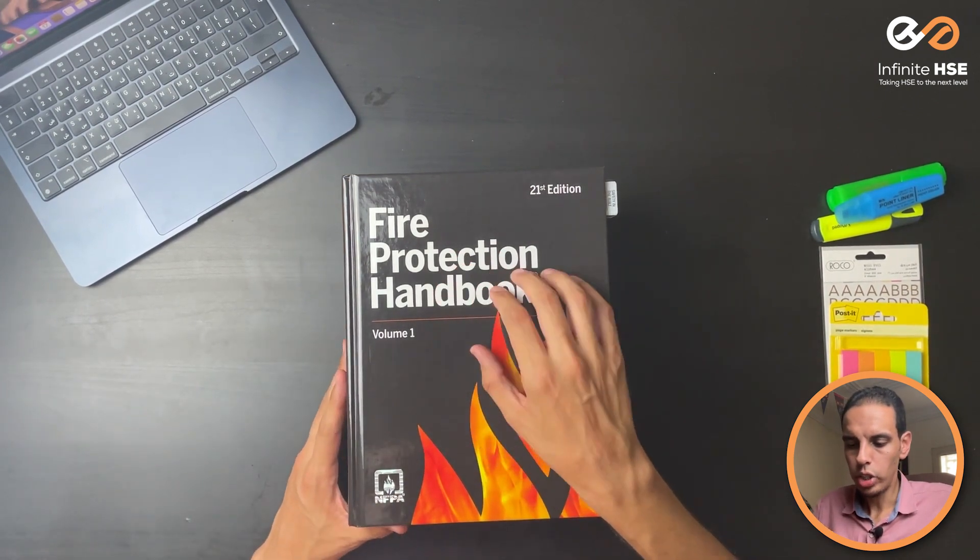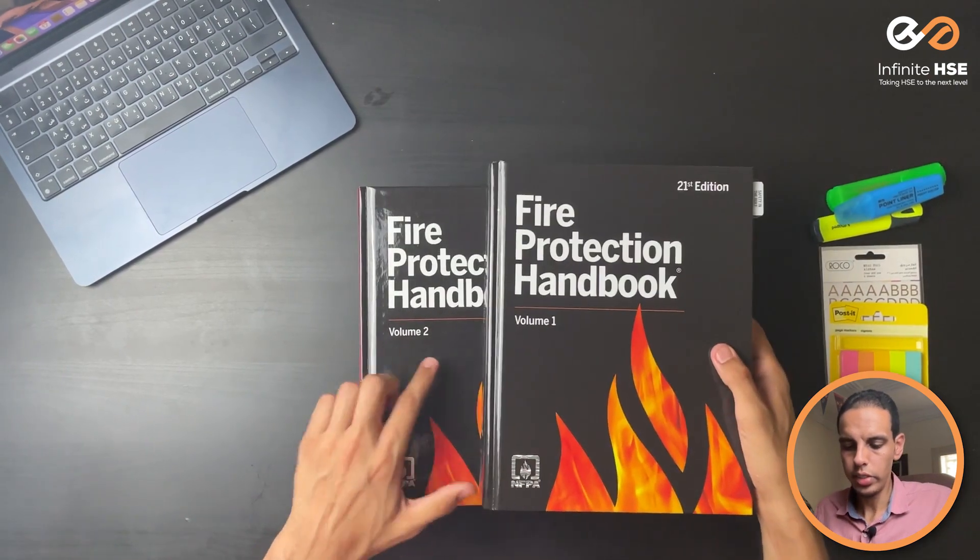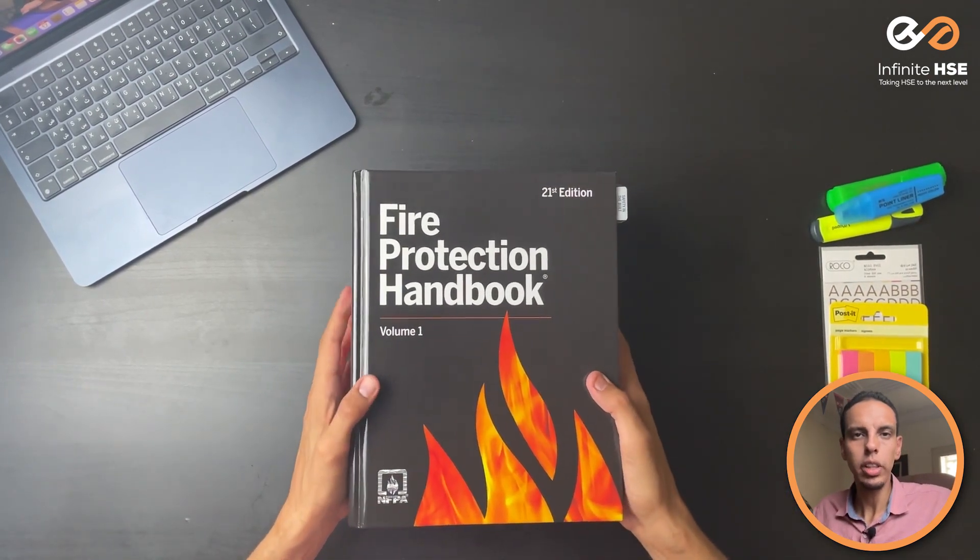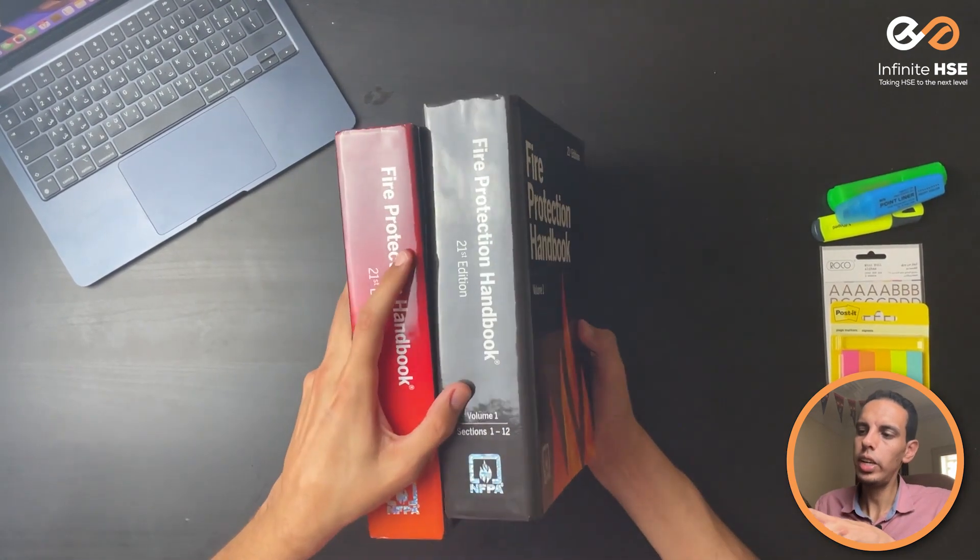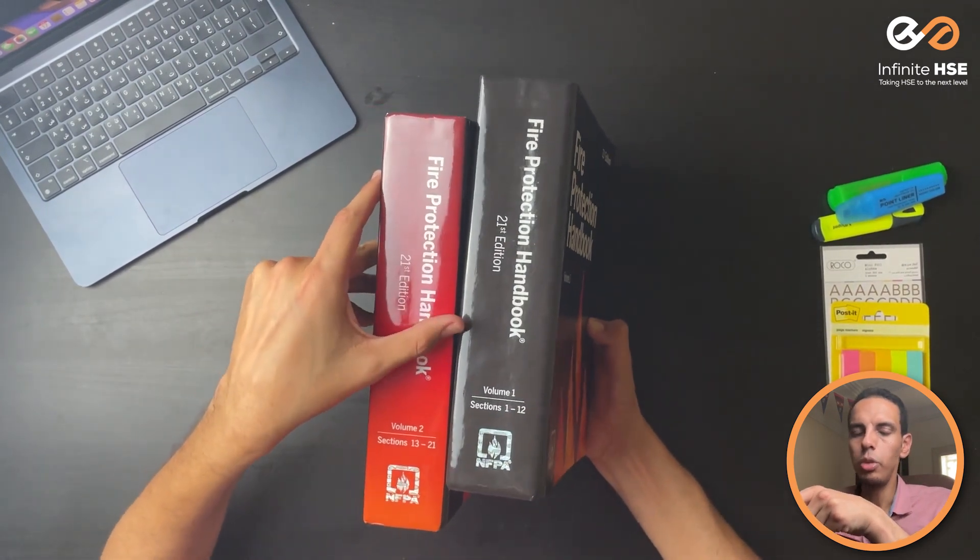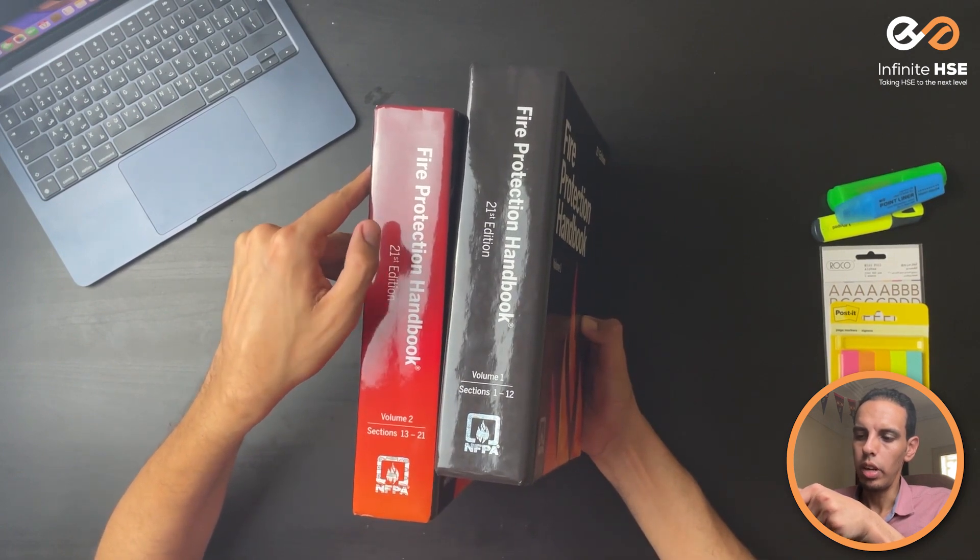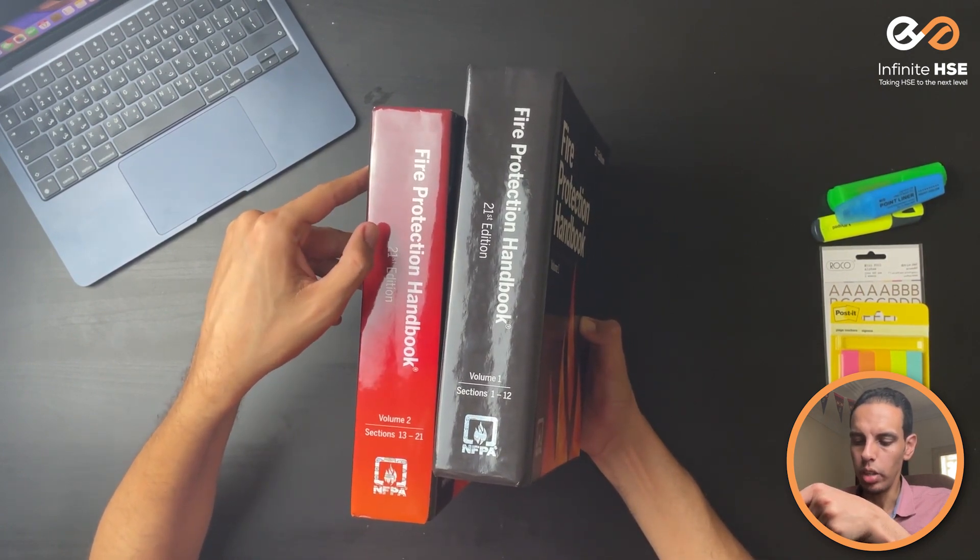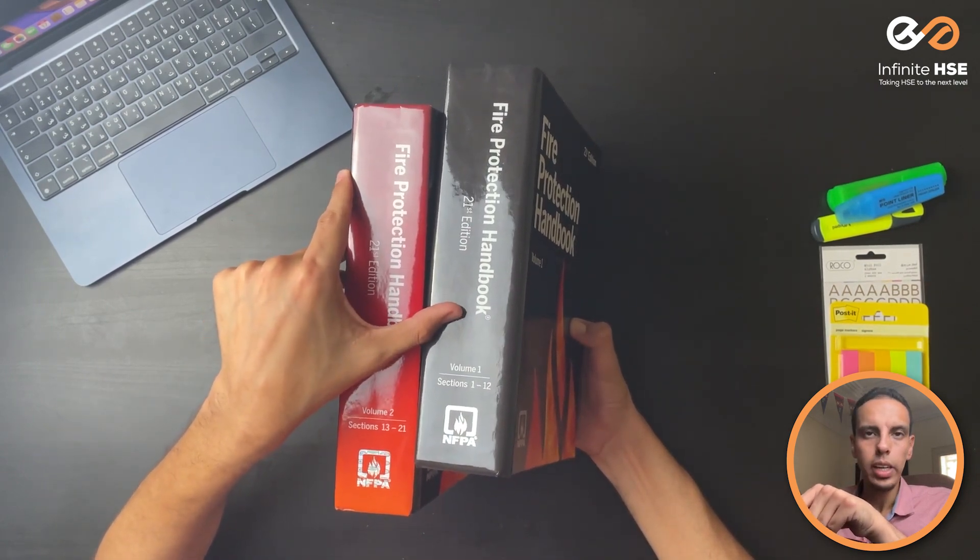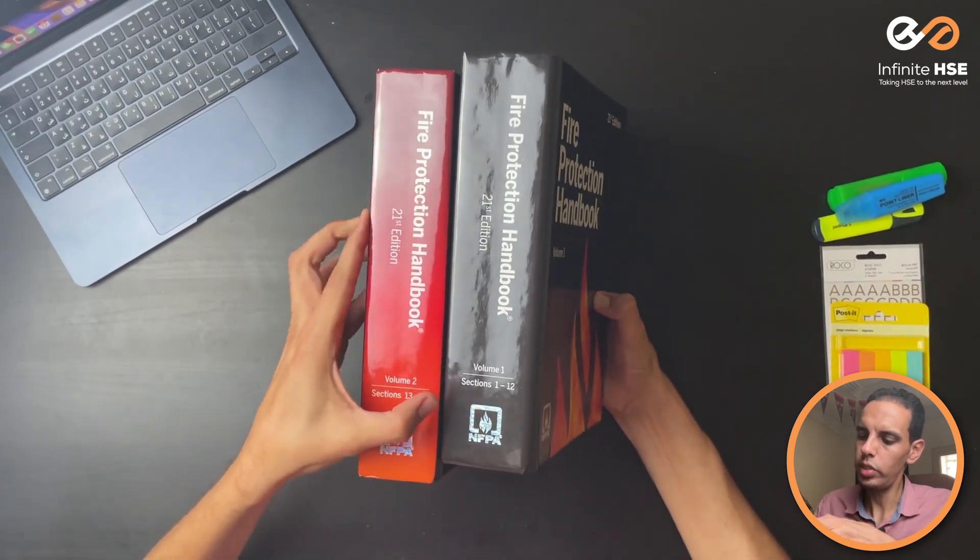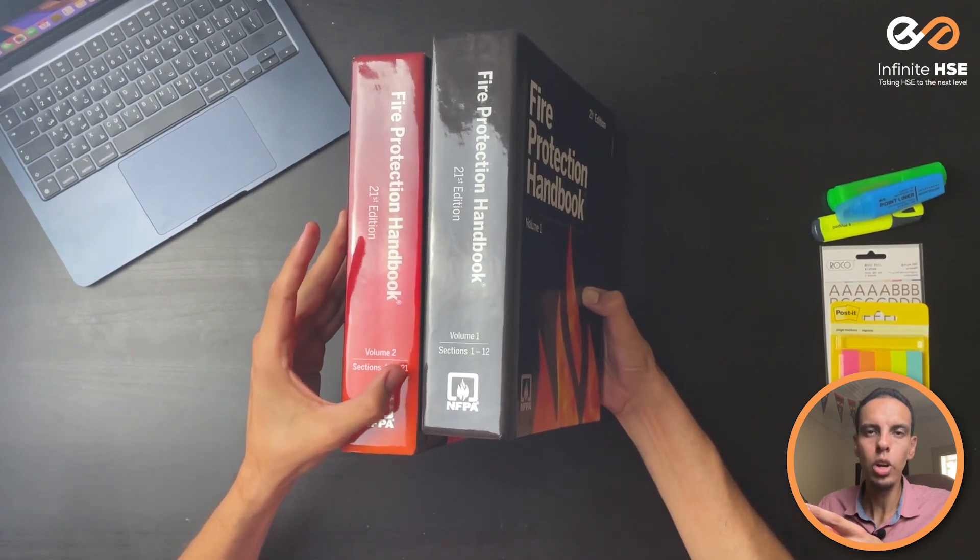This is the Fire Protection Handbook 21st edition, volume 1, and this is volume 2. There is some difference between the 21st edition and the 20th edition. As you can see, there is a difference in the color. Before it was only red color, but now you have volume 2 from section 13 to 21 in red color and volume 1 in black color. Volume 1 contains sections 1 to 12, and volume 2 contains sections 13 to 21.